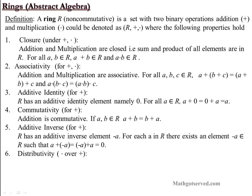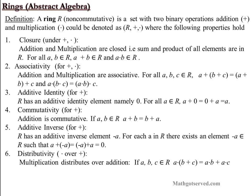The next property that holds is distributivity — the distributivity of multiplication over addition. So the basic distributive property: multiplication distributes over addition. If you have three elements A, B, C, then A times (B plus C) equals A times B plus A times C. This is axiom number 6 in the definition of a ring.